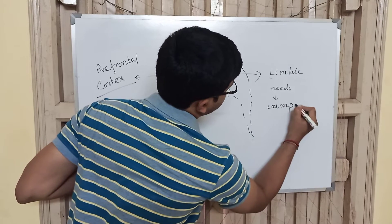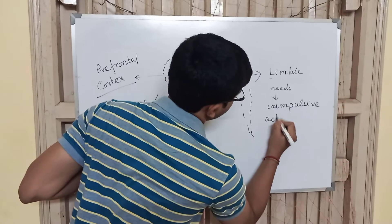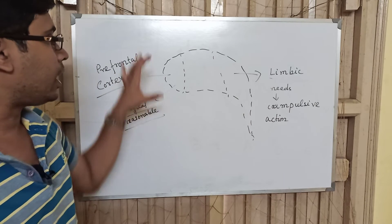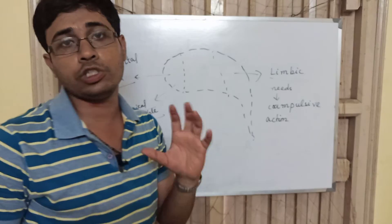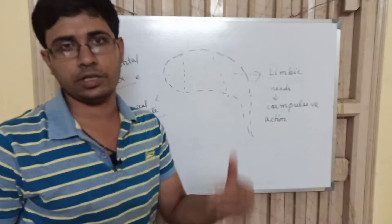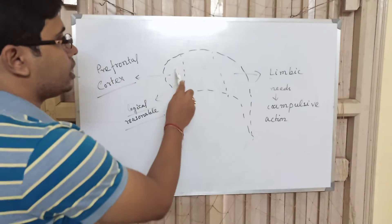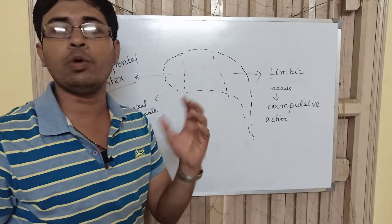This part, the prefrontal cortex, that is responsible for logical reasoning - actually the computation - it is like a computer. This part is like a computer. A computer computes things. Whichever device can compute, that is a computer.